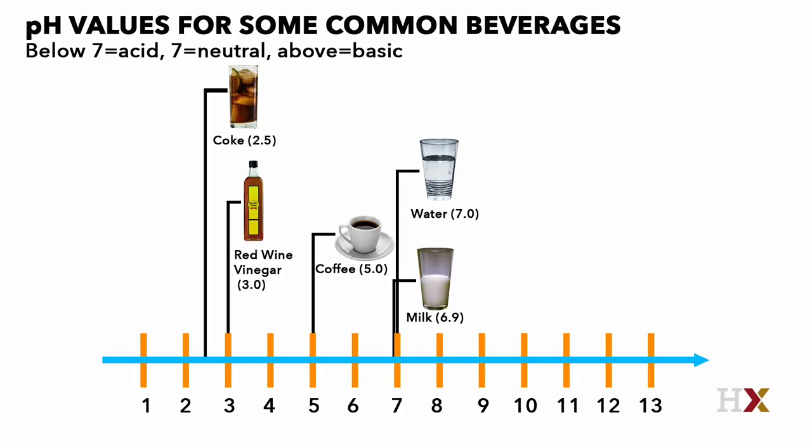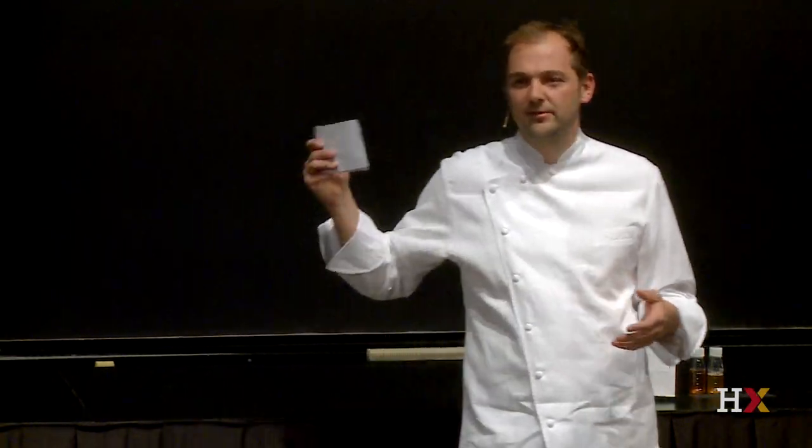We're using a pH meter at the restaurant as a measure to give us more consistency and accuracy — in the same way we use a scale or measure temperature. We took our still water, the water we serve with our meal, and measured it at 7.5. Since 7 is neutral, it's very close to neutral. We also looked at manufactured foods. Coca-Cola is more acidic than red wine vinegar — just imagine that. You drink that with your meal, and it's more acidic than red wine vinegar. And when you drink Coca-Cola, you never think of it as being acidic. That's because there's so much sugar to balance all that acid.